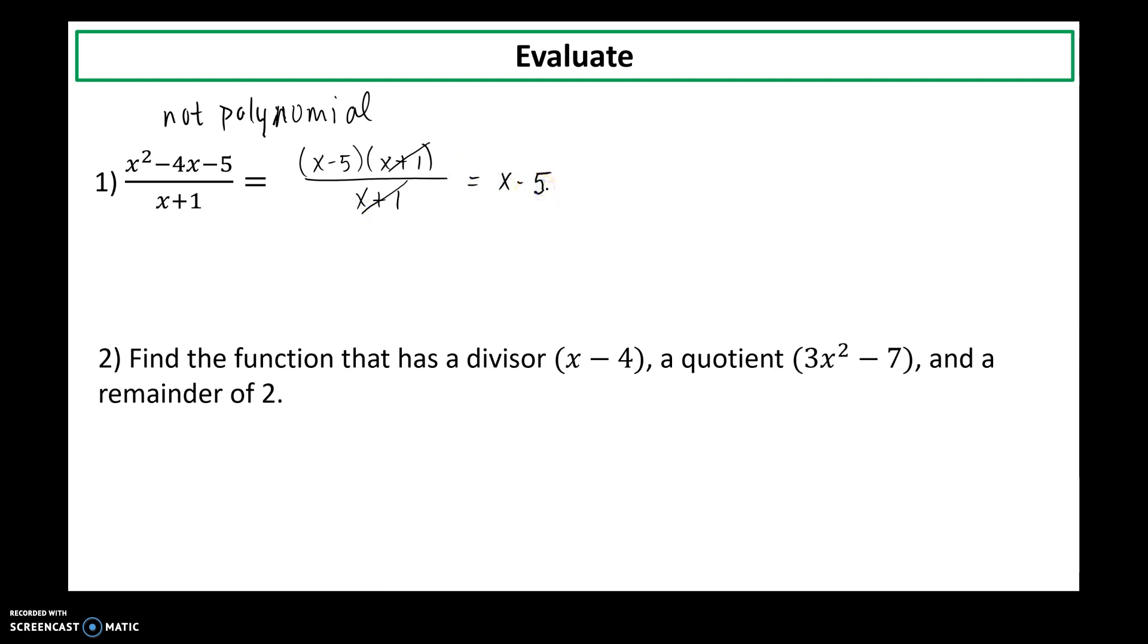Notice that these x plus 1s cancel, and my original non-polynomial does simplify now to a polynomial. And this would be a linear polynomial, because the degree is 1. Now, that's fine, but something that we'll continue to discuss throughout the course of this chapter, there's a domain restriction on this. So although the original simplifies to a nice simple line, the domain is that x cannot equal negative 1. Because on my original function, if I plugged in negative 1, it would put 0 in the denominator.